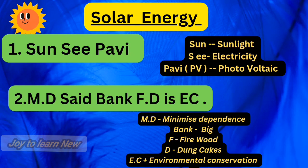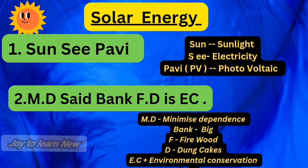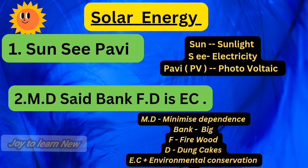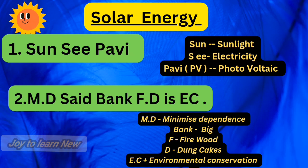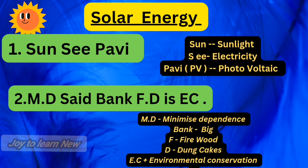Solar energy shortcuts: 'Sun C Pavie' — Sun refers to sunlight, C refers to electricity, PV refers to photovoltaic technology. Photovoltaic technology converts sunlight into electricity.